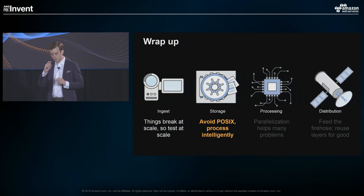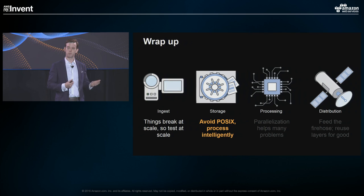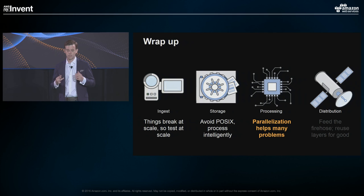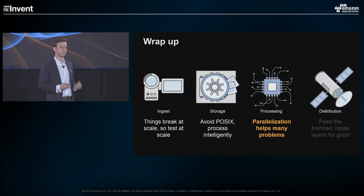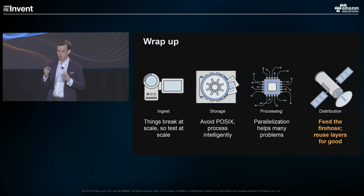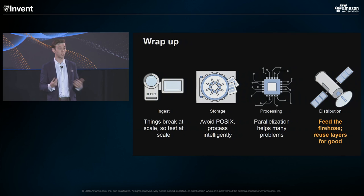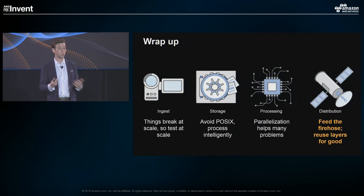To recap the things covered today: when you are ingesting, things will break at scale, so test with data that's actually representative of what you have. Look out for API limits — look for things you didn't expect to break and make sure you've done that end-to-end test with files bigger than you ever expected to use. Keep things API-based and avoid trying to treat an object like a file. Ensure you're dealing with things in the way they're meant to be, and avoid POSIX requirements within your application. Parallelization will help you in many ways when it comes to processing video content — especially because it mitigates your risk factors. And finally, feeding the consumption can be incredibly difficult, but reuse that layer, reuse your capabilities, and improve your customer performance first and they'll stay.